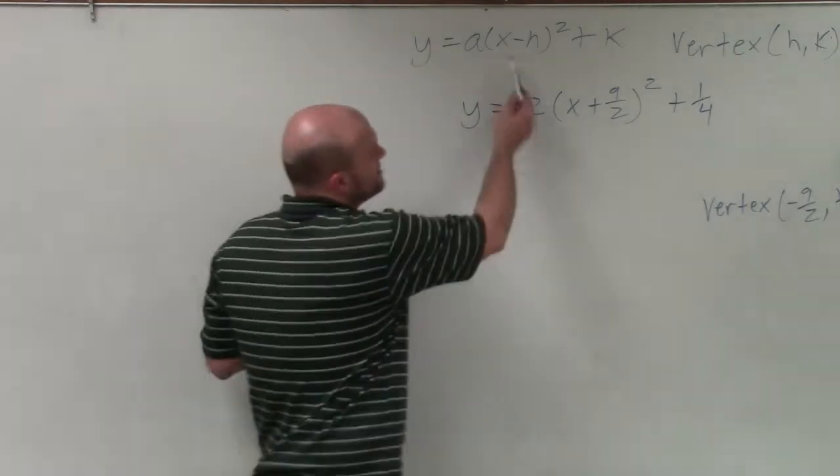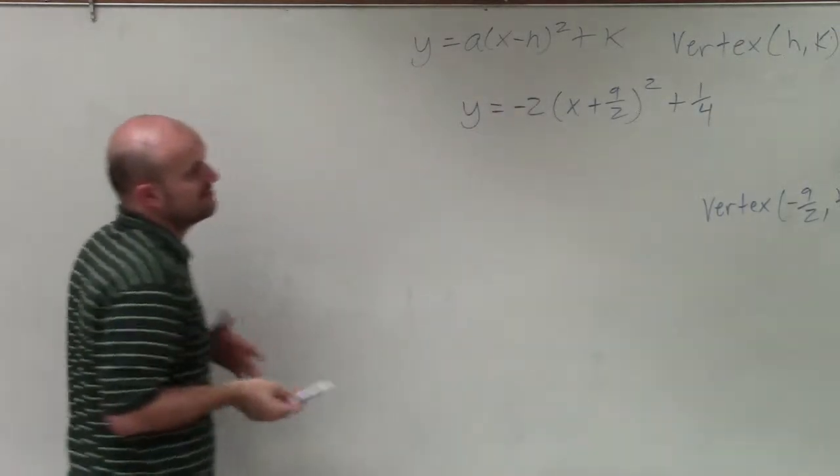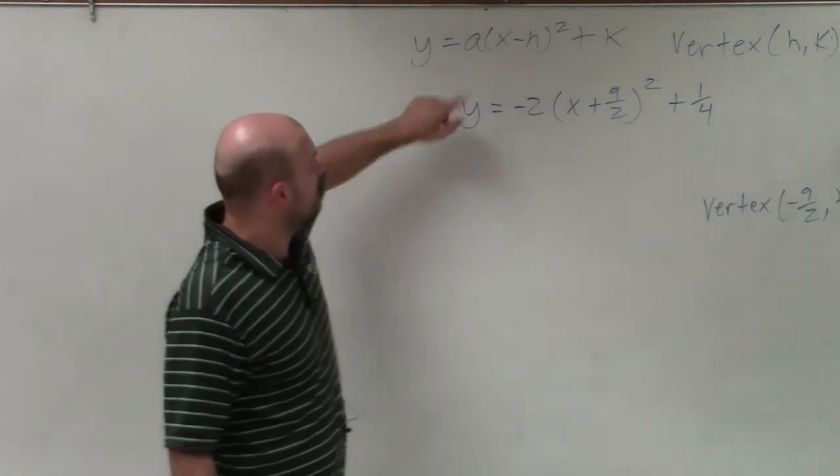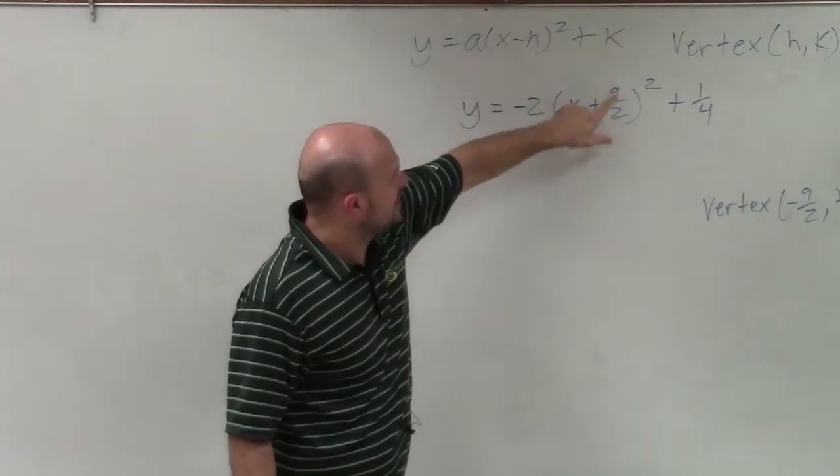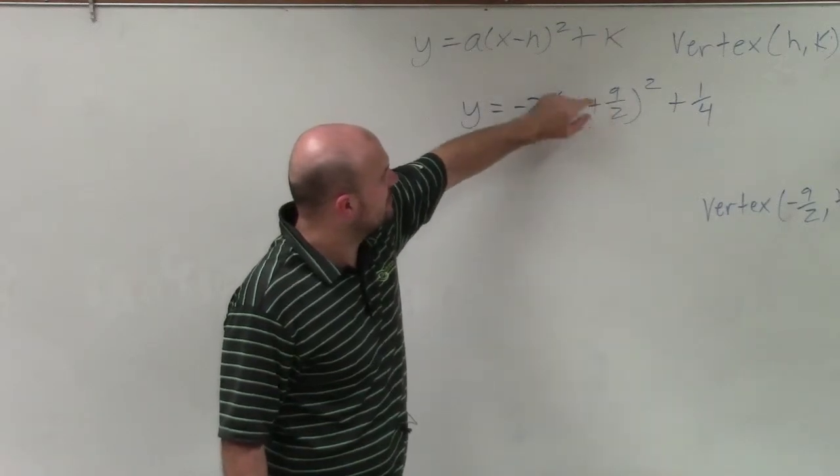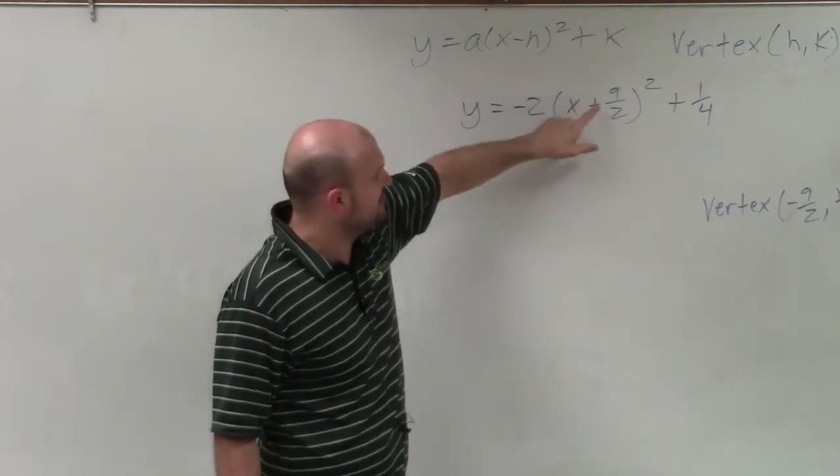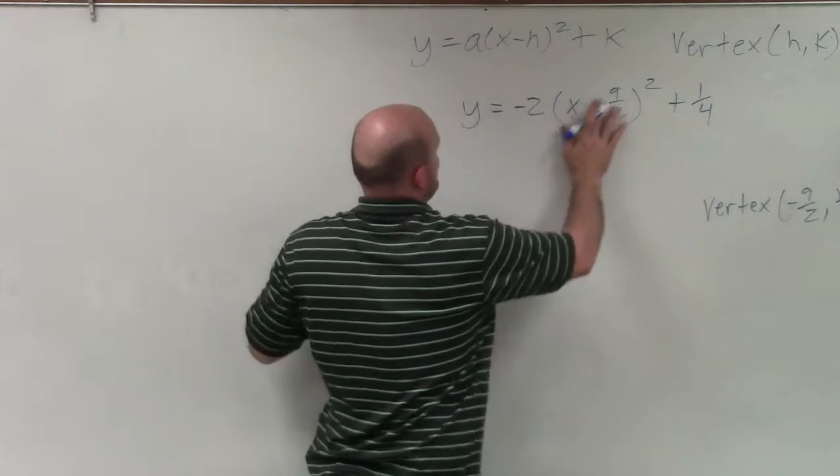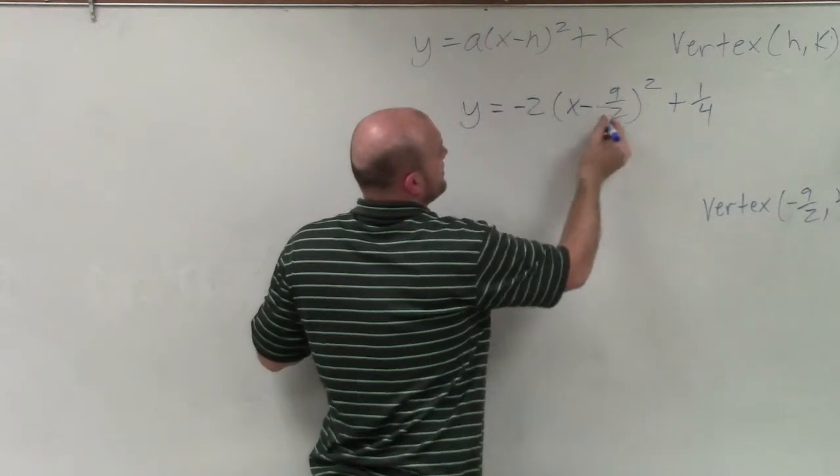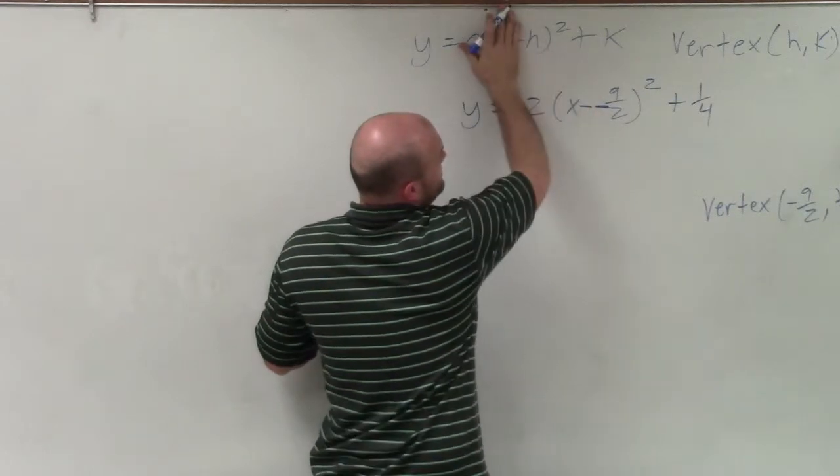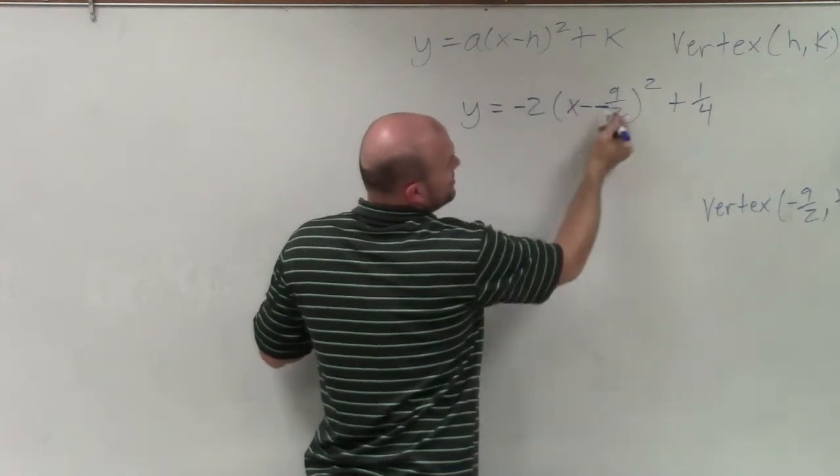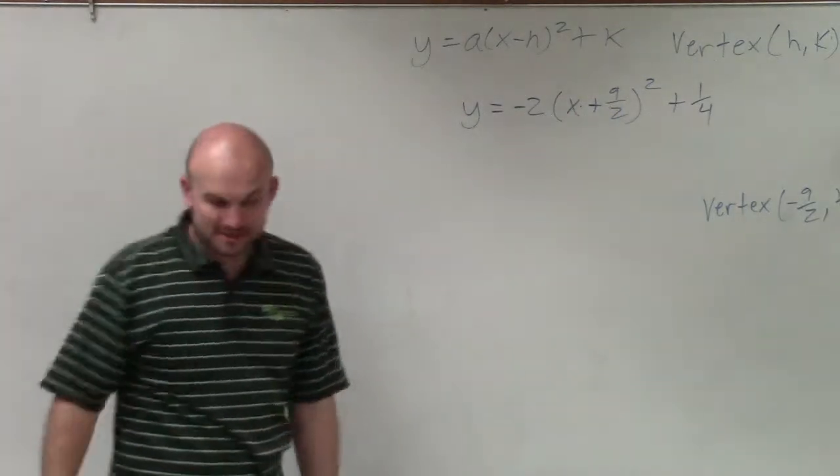The thing that students get tricked up is with the x opposite of hk. And just another way I think about it is x minus h. Right? Well, what is h? h is going to be, if you were to write this, as x minus a negative is the same thing as positive. So if you just cover that up, x minus h, so it's negative 9 halves. Just another way to think about it.